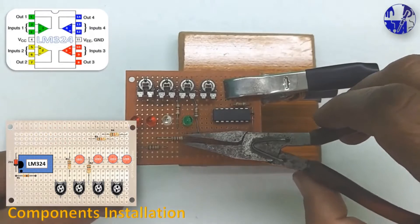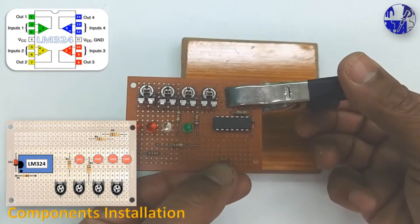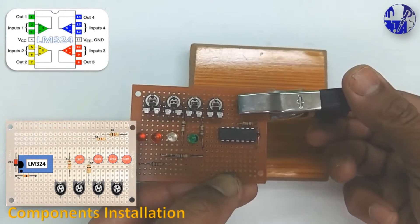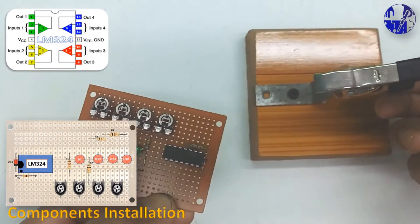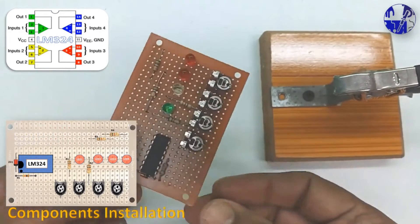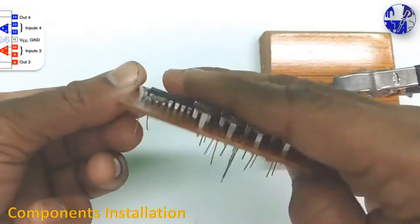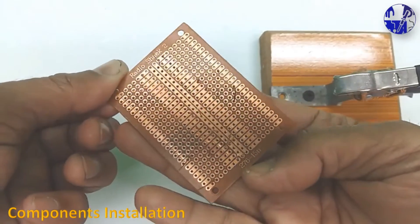The LM324, a quad-channel operational amplifier, serves as an excellent choice for battery voltage-level indicators, ensuring precise and reliable monitoring. Constructing projects like these is ideal for educational purposes.